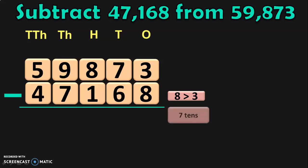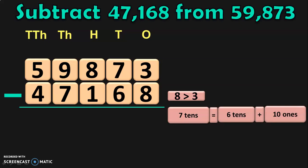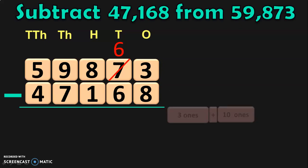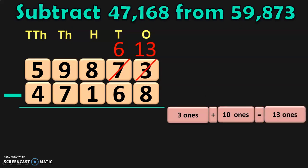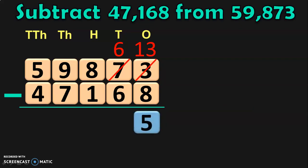So, move to the tens place and see where you have 7 tens. We can regroup 7 tens as 6 tens plus 1 ten, which will give you 7 tens. That 1 ten can be written as 10 ones. So, 7 tens is equal to 6 tens plus 10 ones. So, you can write 6 in the tens place and take this 10 ones to the ones place. In the ones place, we already have 3 ones. So, 3 ones plus 10 ones will give you 13 ones. Now we can subtract: 13 minus 8 will give you 5.